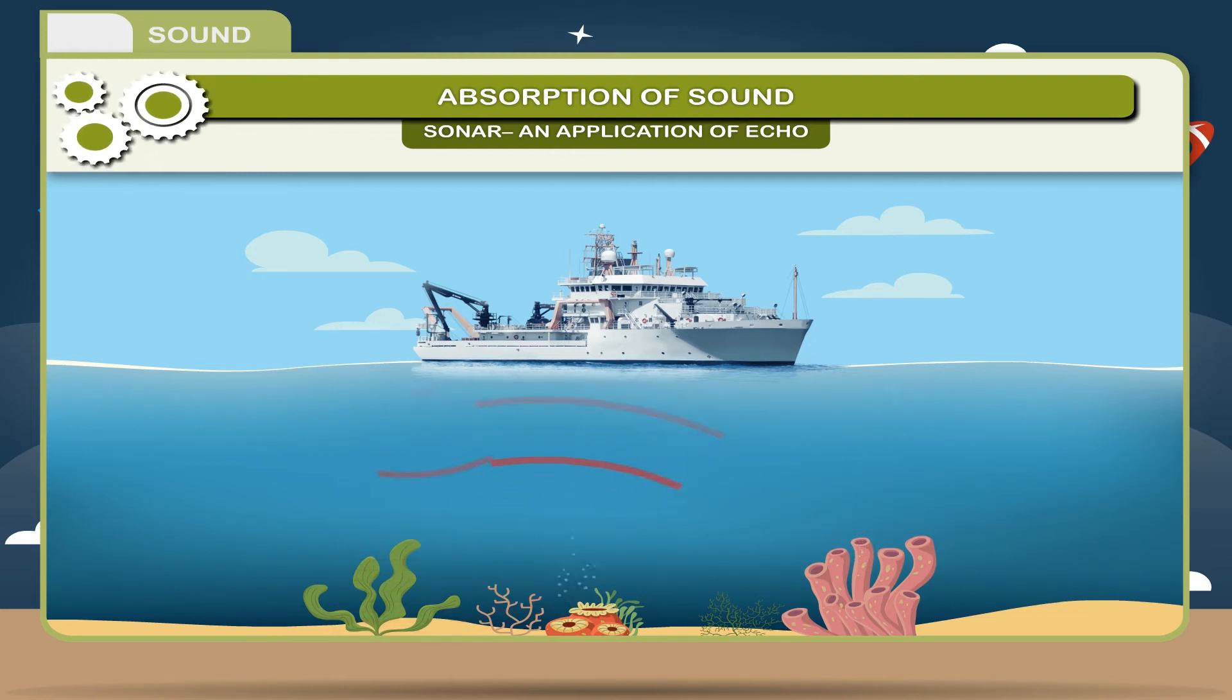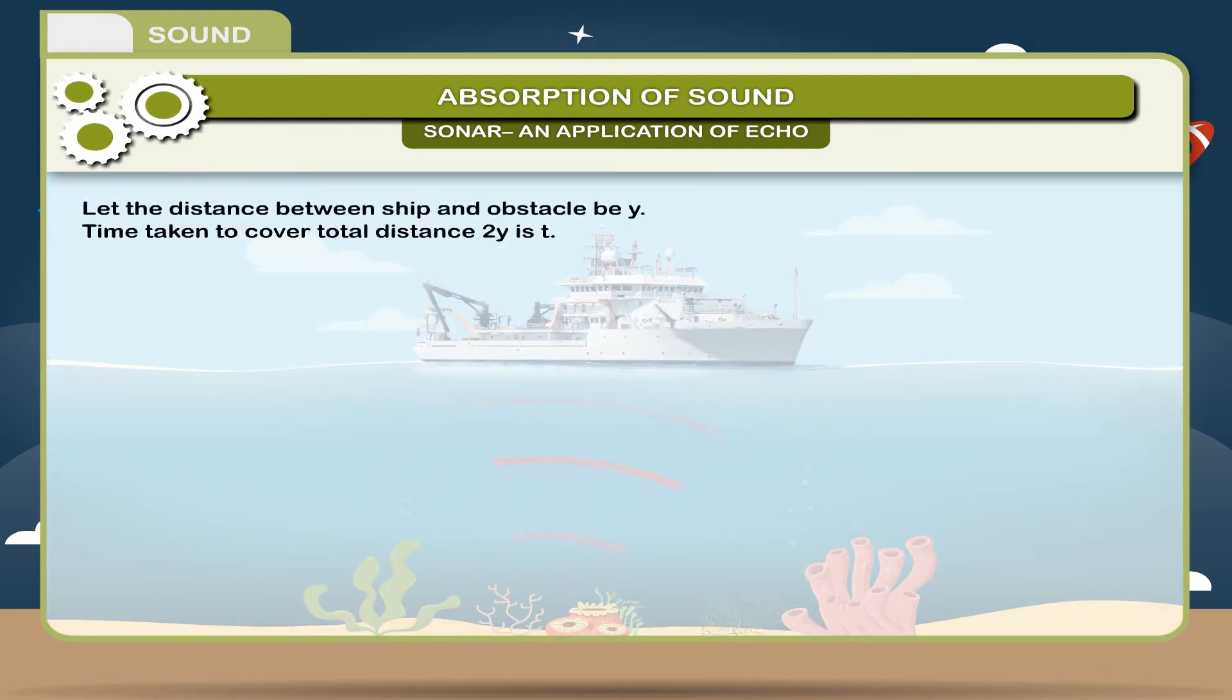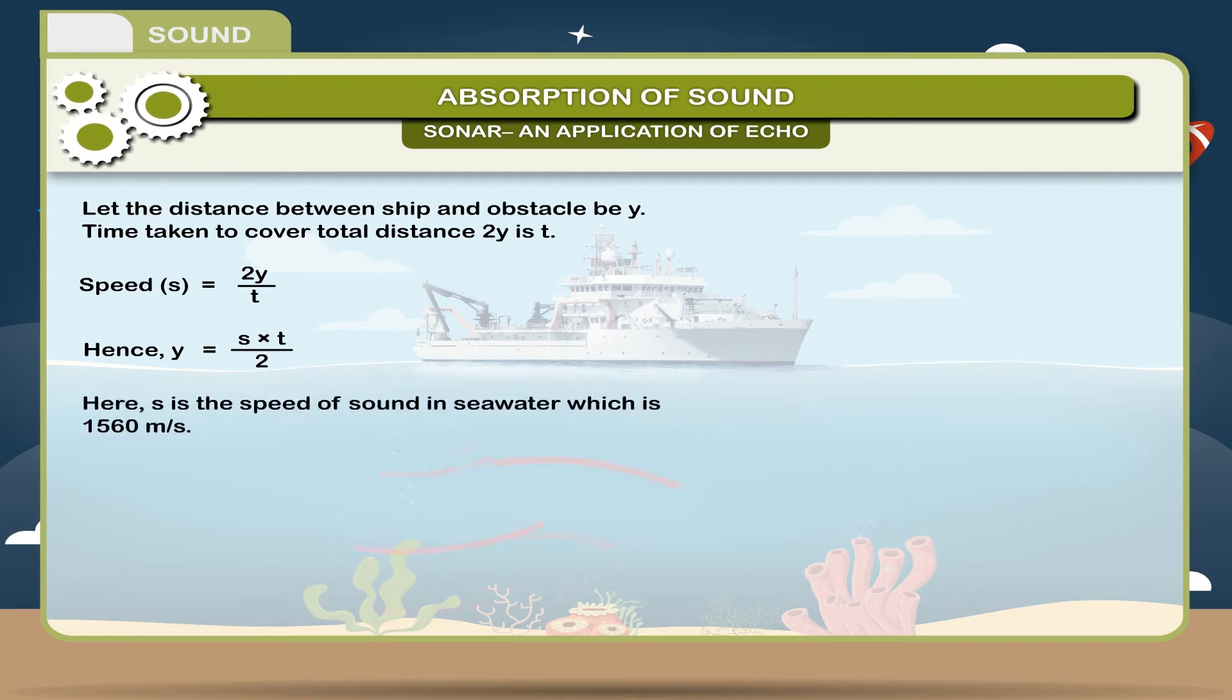to measure the depth of the sea. Let the distance between ship and obstacle be Y. Time taken to cover total distance 2Y is T. Speed S is equal to 2Y upon T. Hence, Y is equal to S into T by 2. Here, S is the speed of sound in seawater, which is 1560 m per second.